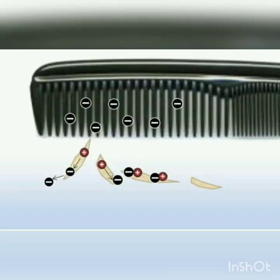If we rub a comb in our dry hair and then try to attract small pieces of paper using the comb, the comb will attract the pieces of paper. Similarly, if we rub a glass rod with a piece of silk cloth and bring it near an inflated balloon, it starts attracting the balloon as well. This means that on rubbing with dry hair, a comb gets electric charge. Even on rubbing with silk cloth, a glass rod also gets an electric charge. But the question arises: where does this electric charge come from? The obvious answer is the atoms present in the comb and the glass rod. This simple example tells us that charged particles are present in the atoms of matter, so we can say that atoms are divisible particles.